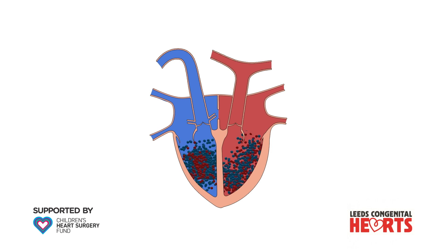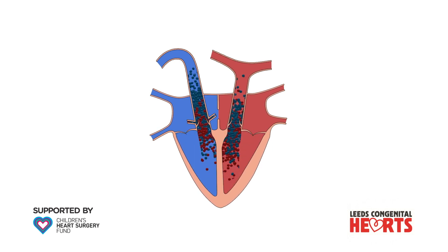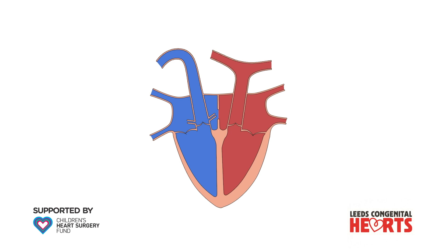By improving the delivery of blood to the body, this procedure buys some time until a corrective operation can be performed. Although not illustrated here, oxygenated blood can also pass between the aorta and pulmonary artery through a small connection called the ductus arteriosus. The ductus arteriosus is open when a baby is in the womb, but usually closes shortly after birth. A baby with transposition of the arteries might be given a drug to keep the ductus arteriosus open until a balloon atrial septostomy or a correction operation are performed.